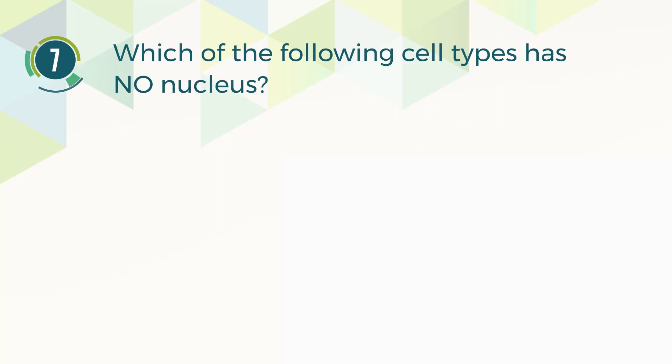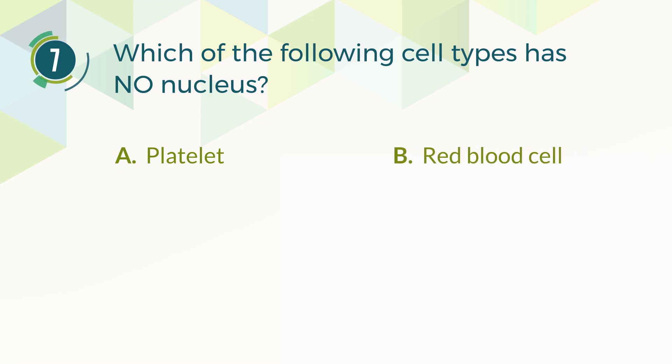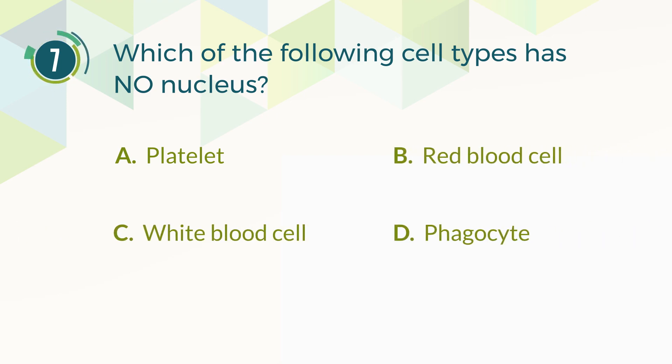Number 7. Which of the following cell types has no nucleus? A. Platelet. B. Red blood cell. C. White blood cell. D. Phagocyte.